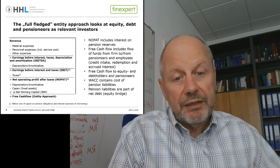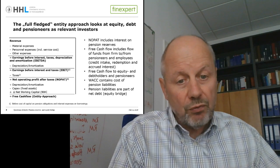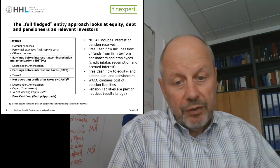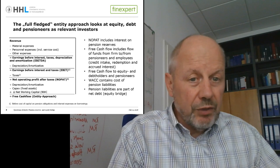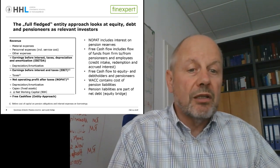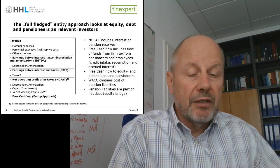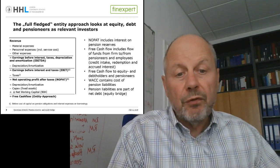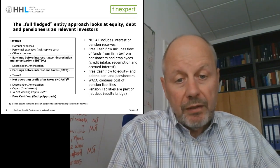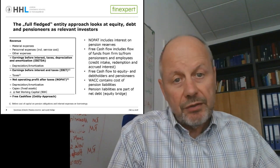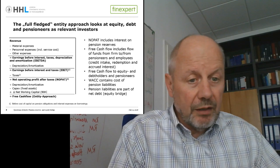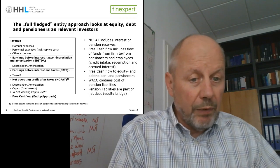This also answers the question with respect to the WACC. Because if the relevant free cash flow goes into the pockets of the three classes of investors, then the WACC should also be the weighted average cost of capital over the three sources — and that means the costs for the pensioners shall be part of the WACC definition.